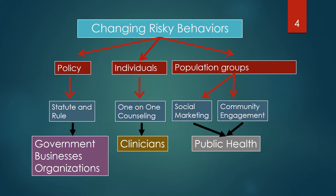This slide lists the major tools we have to change risky behaviors. First, there's policy developed by governments — local, state, and national — businesses, schools, and other organizations, implemented by statute and rule. Policy can be either good or bad; good policy sets an environment encouraging healthy choices. Another set of tools is the clinical setting, with clinicians providing one-on-one counseling, a powerful tool. The third set of tools are population-based interventions, the domain of public health, which can be subdivided into social marketing and community engagement.